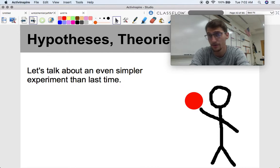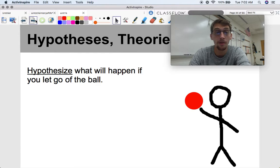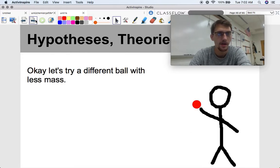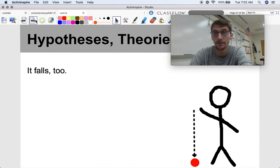Let's talk about a simpler experiment, even simpler than the one that we did with the tomato plants in the last video. All right, so here's a stick figure and it's got a ball. Hypothesize what will happen if you let go of the ball. Well, it's going to fall to the floor, right? We know that that's going to happen. All right, let's try a ball with a different mass. This is a smaller ball with a lower mass. What's going to happen? It's going to fall too.